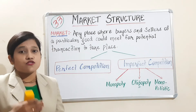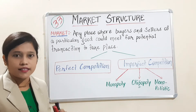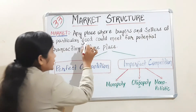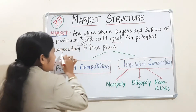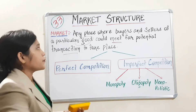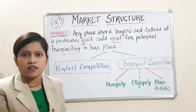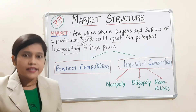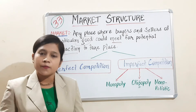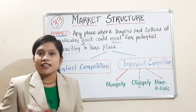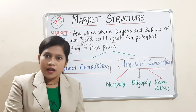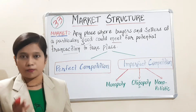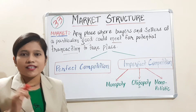Before moving to market structure, we first need to know what we mean by market. Market means any place where the buyers and sellers of a particular good could meet with each other for a potential transaction to take place. We cannot identify market as only a general shop or a mall. For example, Amazon and Flipkart — though they are online platforms, buyers and sellers meet each other there for the potential transaction of a particular product. So that can also be called a market.